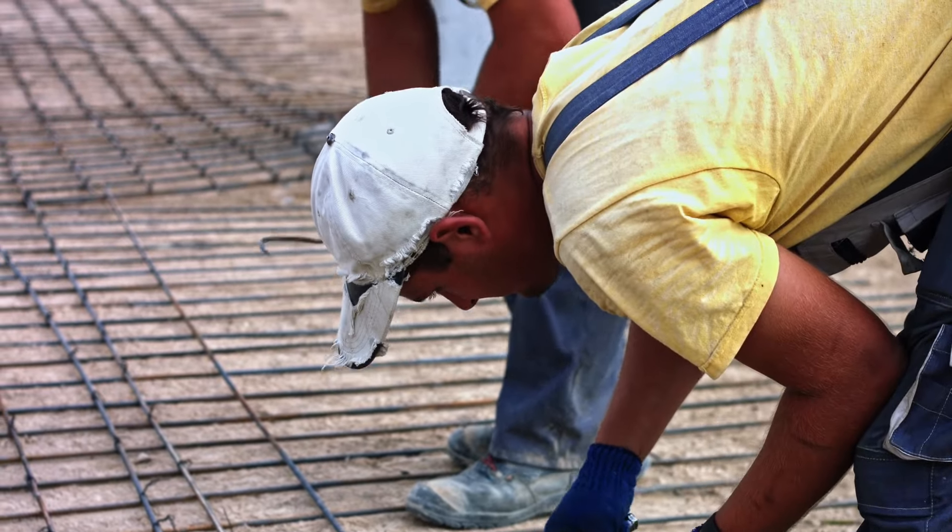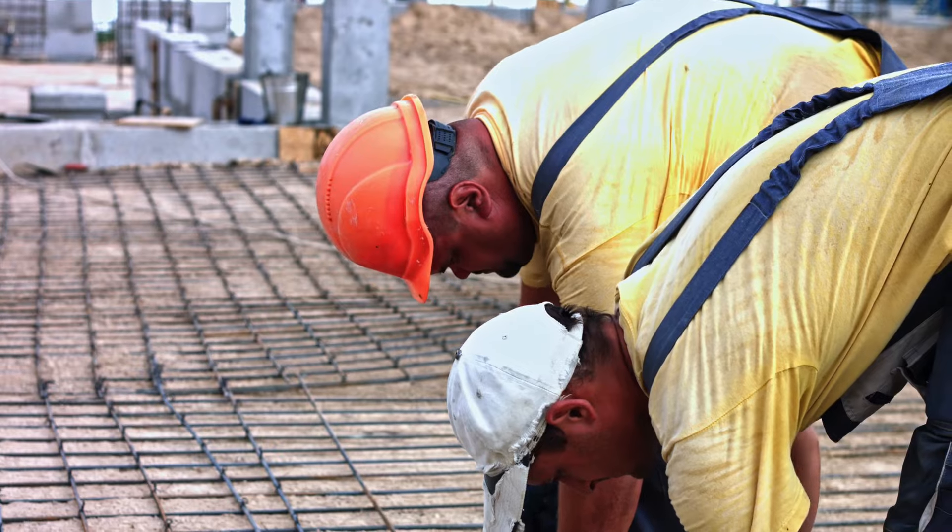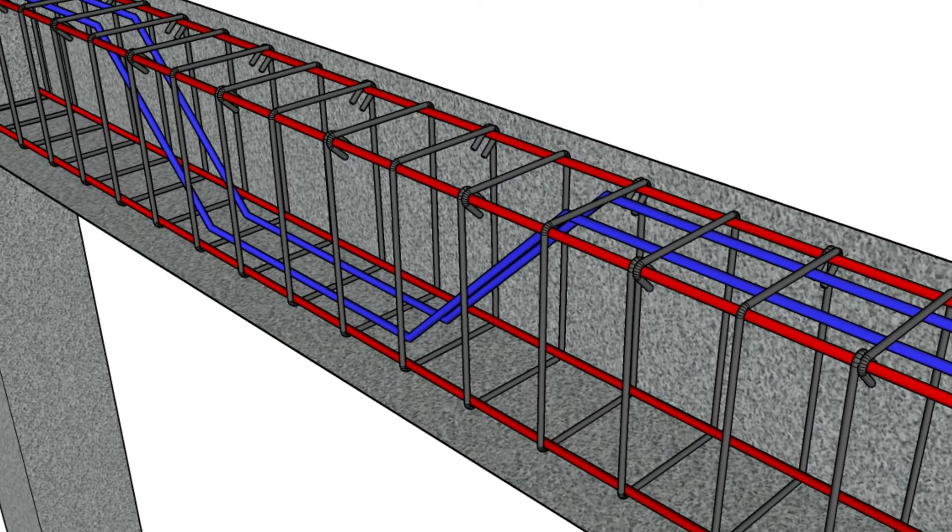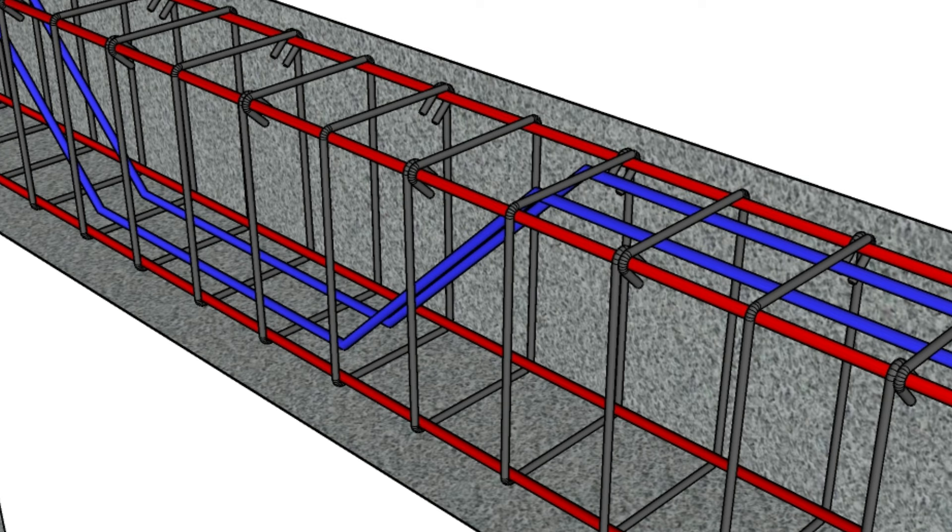Now, let's go through some common bend deductions that we encounter in bar bending schedule. Bend reduction for a bar of diameter D bent at an angle of 45 degrees is taken as one times the diameter of the bar. The application of a 45 degree bend can be found in case of cranked bars used in slabs and beams.